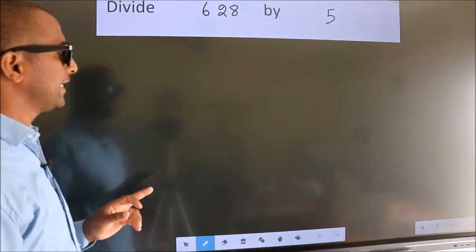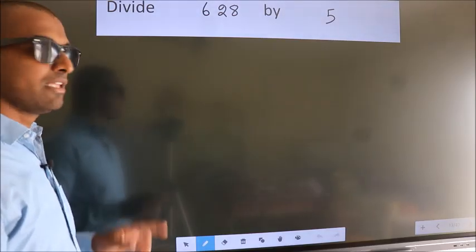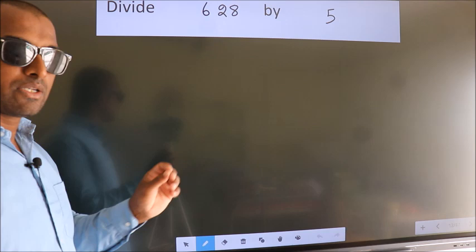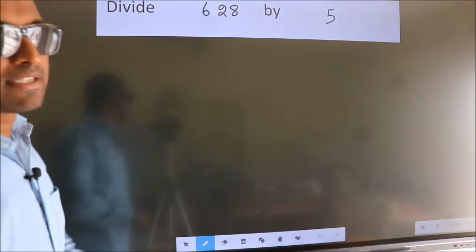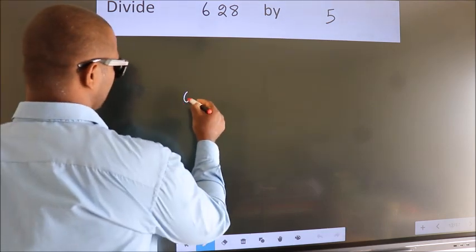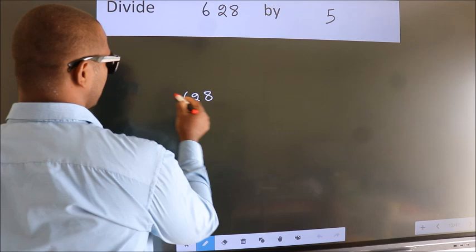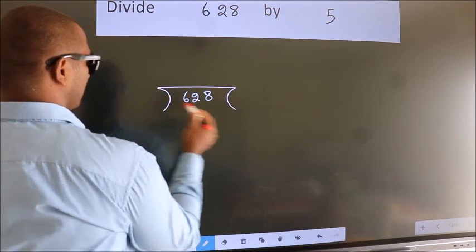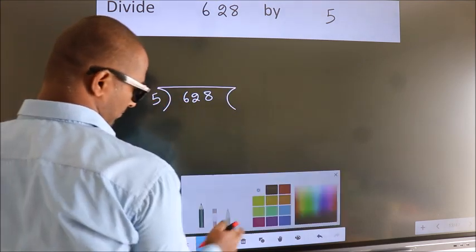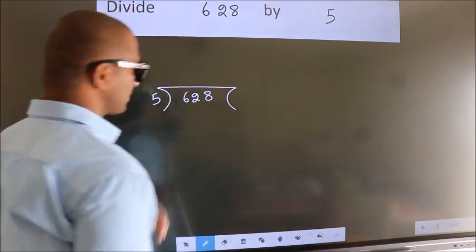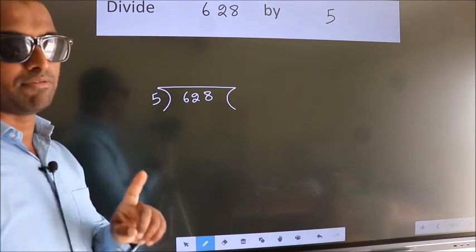Divide 628 by 5. To do this division, we should frame it in this way. 628 here, 5 here. This is your step 1.